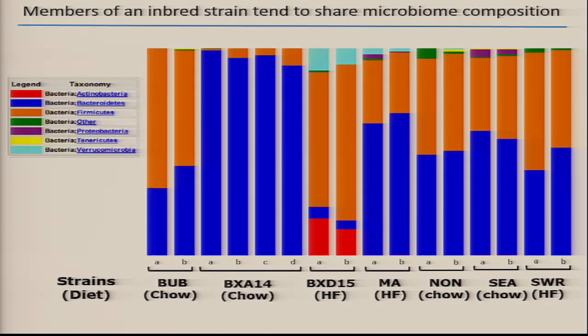That suggests there is a genetic component, but it doesn't prove it. There's one particular problem: maternal seeding. All of these mice have been derived from a common mother some generations ago, and we've raised them in our laboratory for at least two generations. So how do we know this similarity is due to genetics rather than maternal seeding?